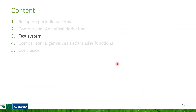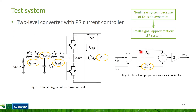Now let's look at the test system used in the paper. To clearly show how the methods are applied, we chose a very simple average model of a two-level converter with an AC side filter and a constant DC side current source. We do not use a stable DC voltage source, meaning the dynamics of the DC side capacitor are included in the analysis. The state variables are the currents in the inductors, the voltages across the capacitors, and two states per phase related to the proportional resonant current controller. We did not consider outer control loops or PLL. Because of power balance between the two sides, the system is nonlinear, and because all variables are in the ABC frame of reference, the resulting small signal model is time periodic, justifying the application of frequency lifting techniques.